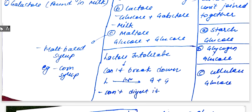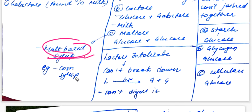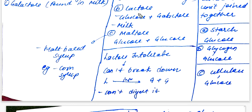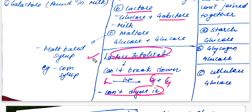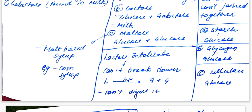Maltose is found in malt-based syrup. It is made of glucose and glucose. Some people are lactose intolerant — they lack the enzyme that breaks lactose down into glucose and galactose, so they cannot digest lactose. These kinds of people are called lactose intolerant.